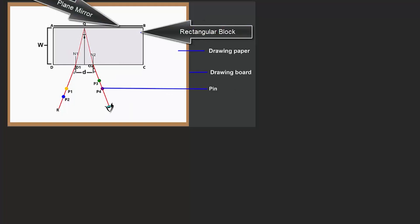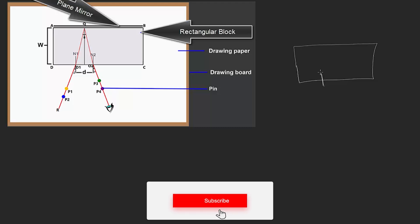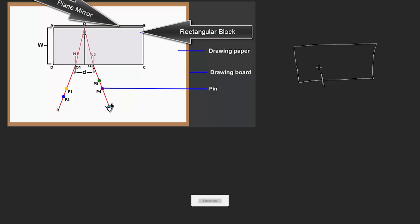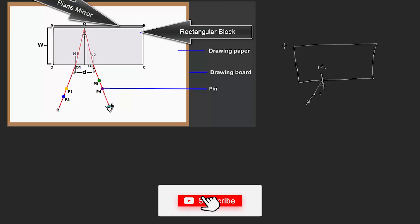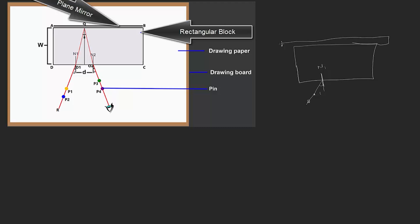Let's go through the experimental procedure. So let's say this is the rectangular block prism. You draw a perpendicular line here — the perpendicular line will be at 90 degrees to this prism. Call this N1. The next thing you do is to measure your incident angle I, then place two pins here.